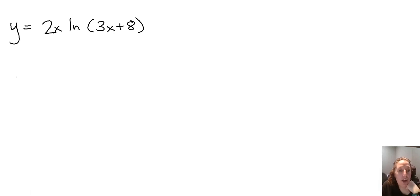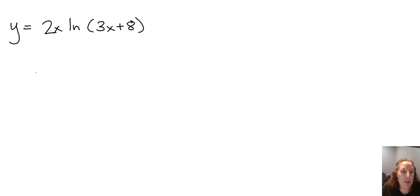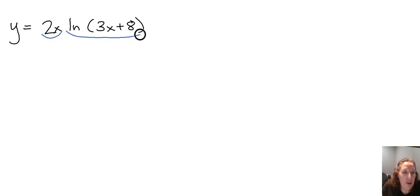Hello. In this video, we're going to look at a couple of examples involving logarithmic functions and the product and quotient rules for derivatives. Our first function is y equals 2x times the natural log of 3x plus 8. This is a product rule, where our first is 2x and our second is that natural log piece.